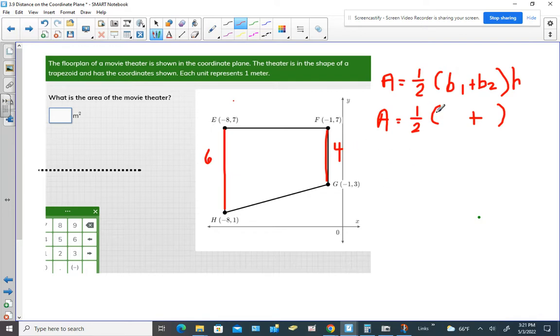Alright, so we know that one of the parallel lines is 4 and the other one is 6. Now we need to know the height. Now remember, the height has to be perpendicular to the bases, meaning it forms a 90 degree angle. That's this line right here. That's perpendicular to both the red lines.